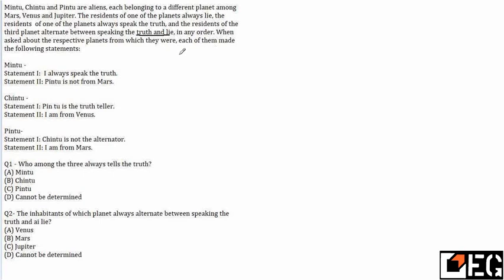When asked about their respective planets, each of them made some statements. Now in these types of puzzles, the trick is we assume the value of one person to be correct — we assume one person to be a truth-teller — and then we check the conditions for that particular person. Let's see how we can proceed in this set.